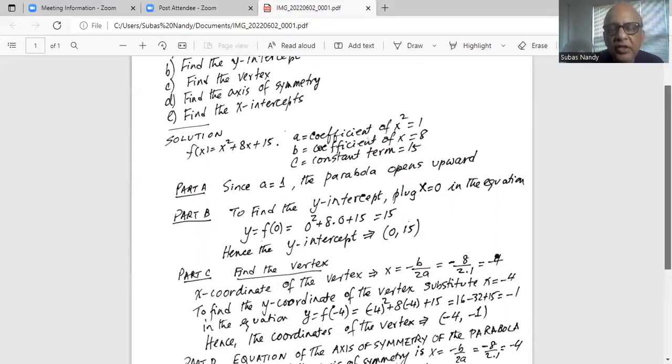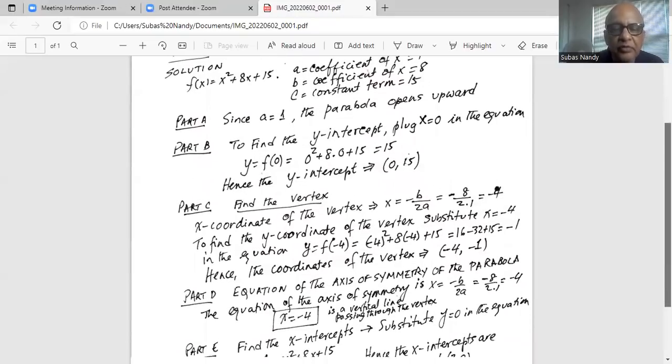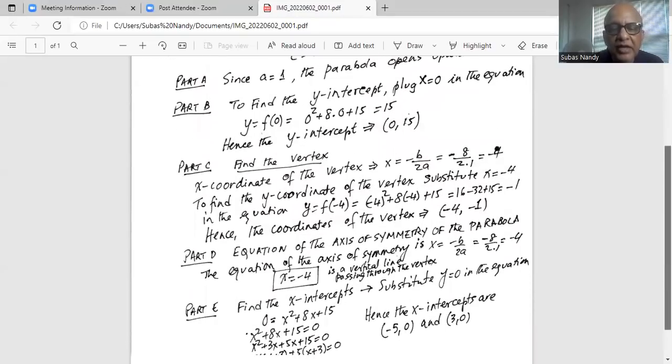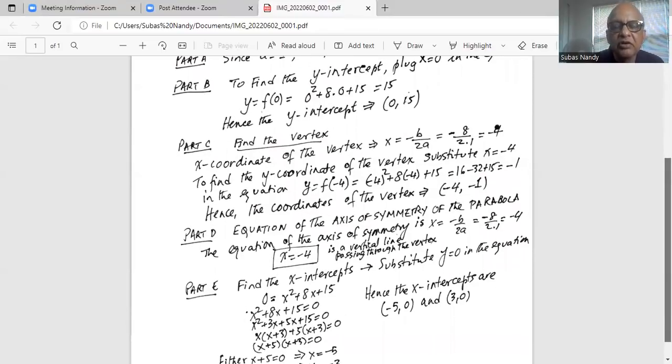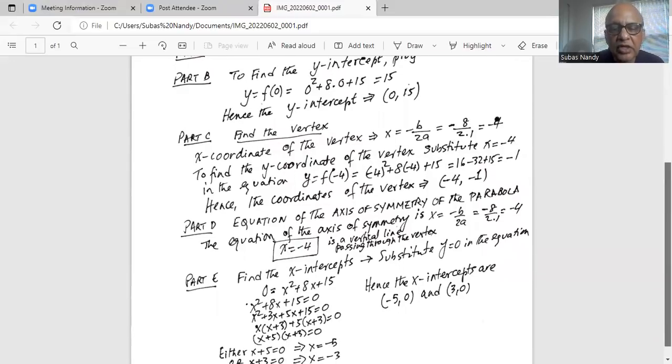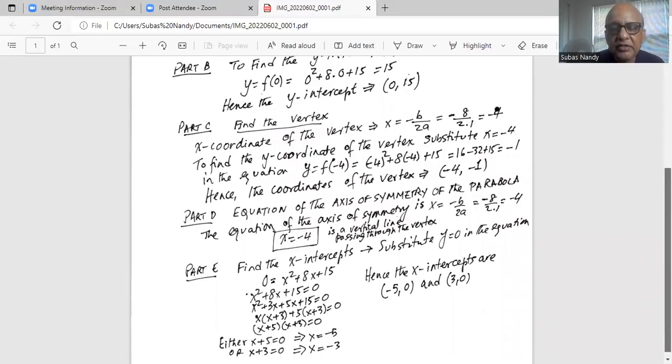The last part asks us to find the x-intercepts. To find the x-intercept on the x-axis, y is always equal to 0. We substitute y equal to 0 in the equation and get 0 equal to x squared plus 8x plus 15. So basically we have x squared plus 8x plus 15 equal to 0, which is a quadratic equation, and we factorize that.